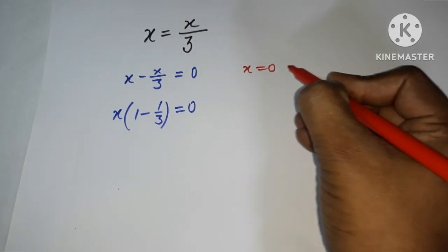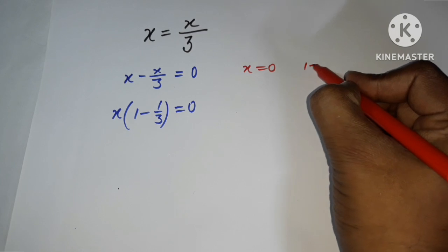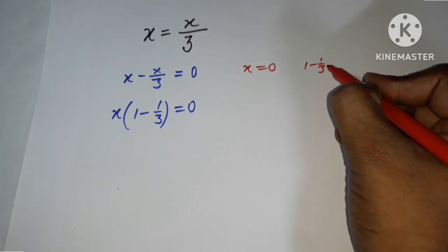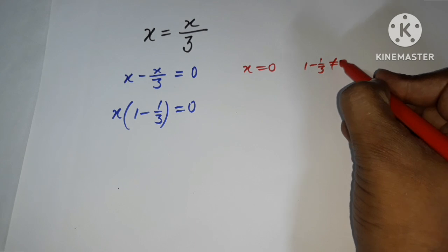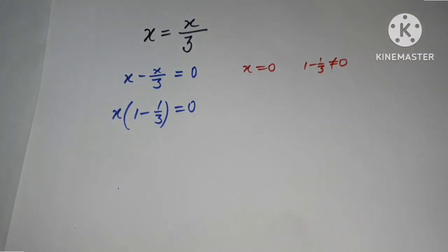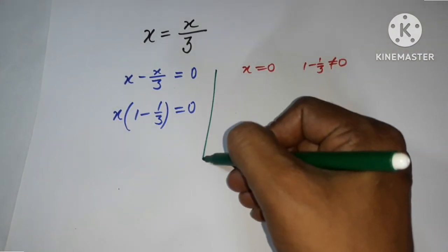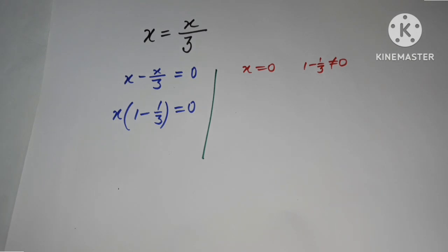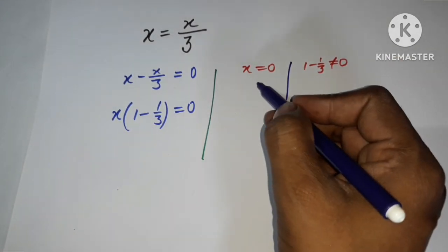(1 minus 1 upon 3) will not be equal to 0. Since 1 minus 1 upon 3 is not going to equal 0, obviously x will be equal to 0.